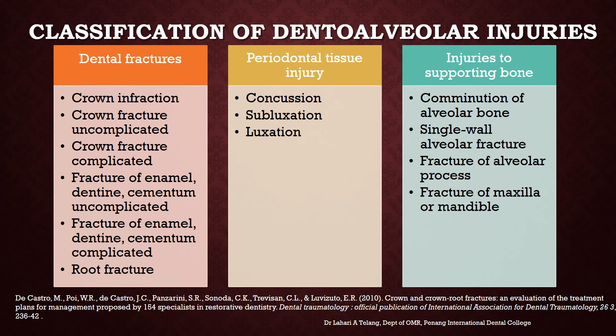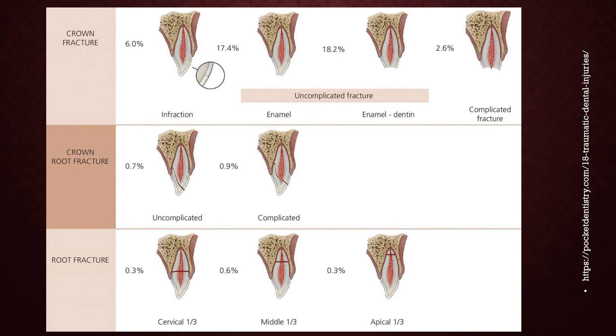Periodontal tissue injuries could be concussion, subluxation, and luxation. Injuries to supporting bone could be due to comminution of alveolar bone, single wall alveolar fracture, fracture of the alveolar process, and fracture of the maxilla or mandible. This is a diagrammatic representation of how crown fractures look.